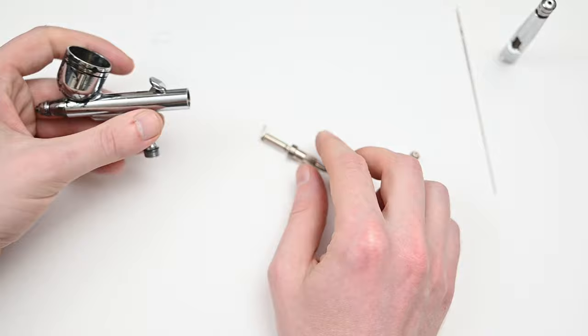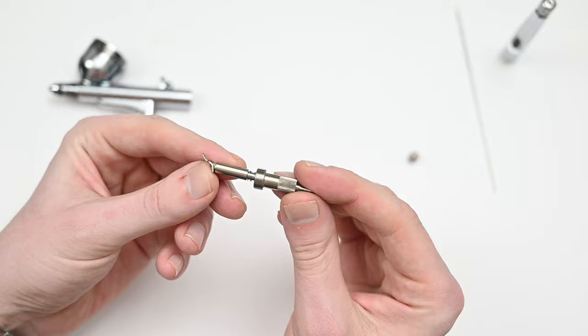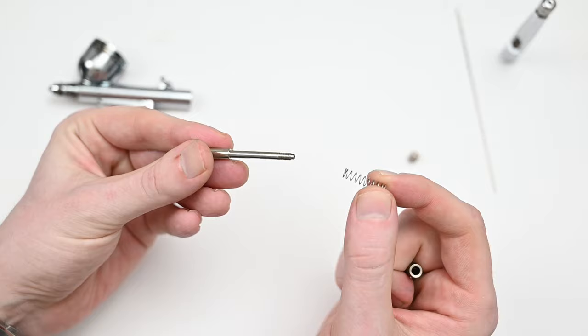But if you fully unscrew this, you're able to remove the entire spring assembly guide. This one consists of three parts, the guide, the spring, and the housing. And I do like that the lever is connected to this one. It just makes it so much easier to break down.